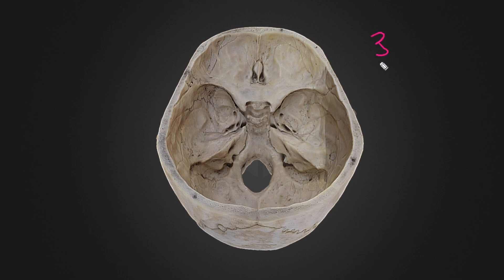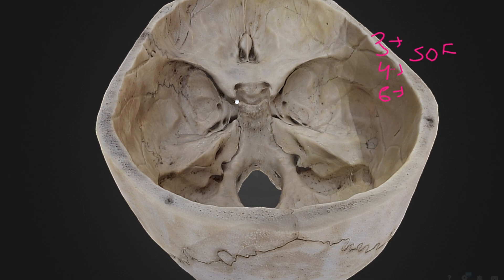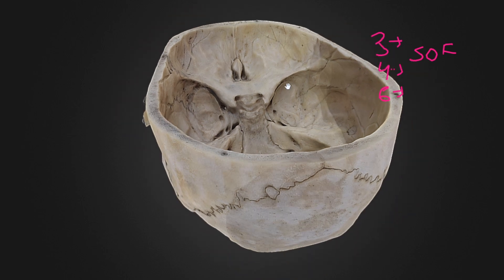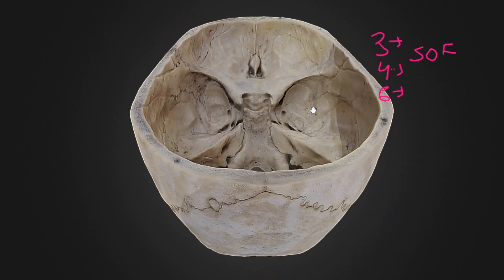The third, fourth, and sixth cranial nerves are remembered together. Third is oculomotor, fourth is trochlear, and sixth is abducent. They all pass through an opening called the superior orbital fissure. Tilting the cranial cavity, you can see an oblique space just beneath the lesser wing of the sphenoid — this is the superior orbital fissure. All three nerves pass through it.